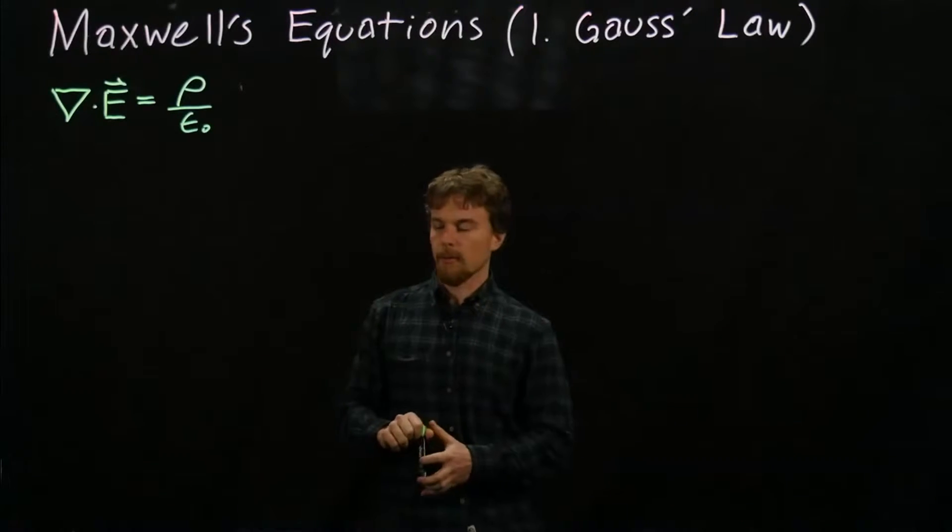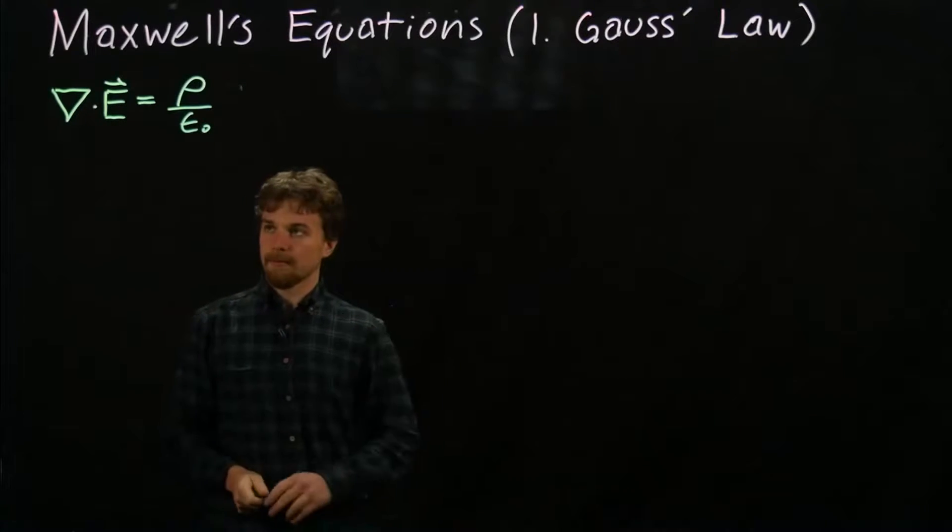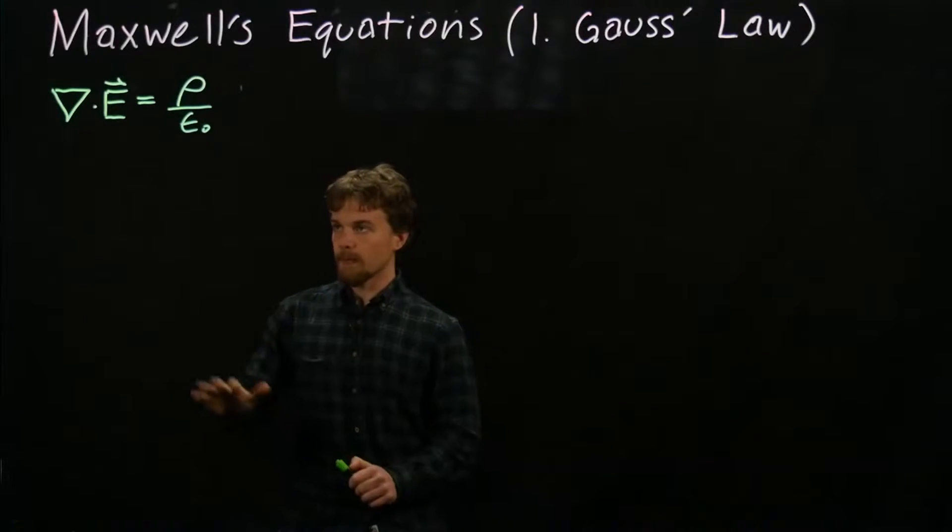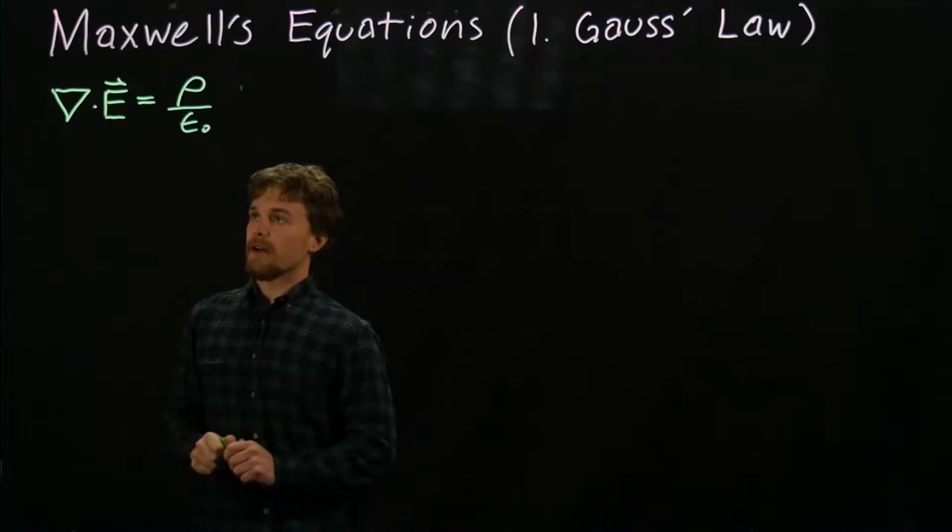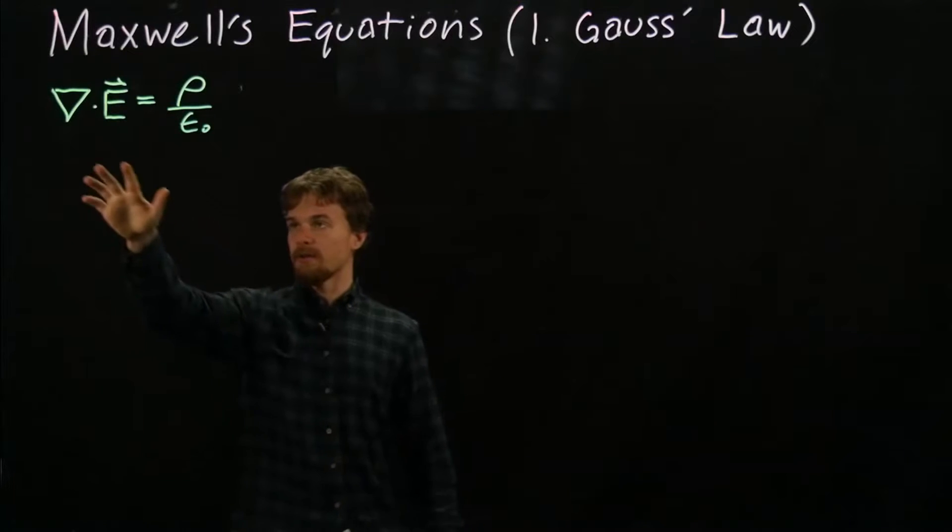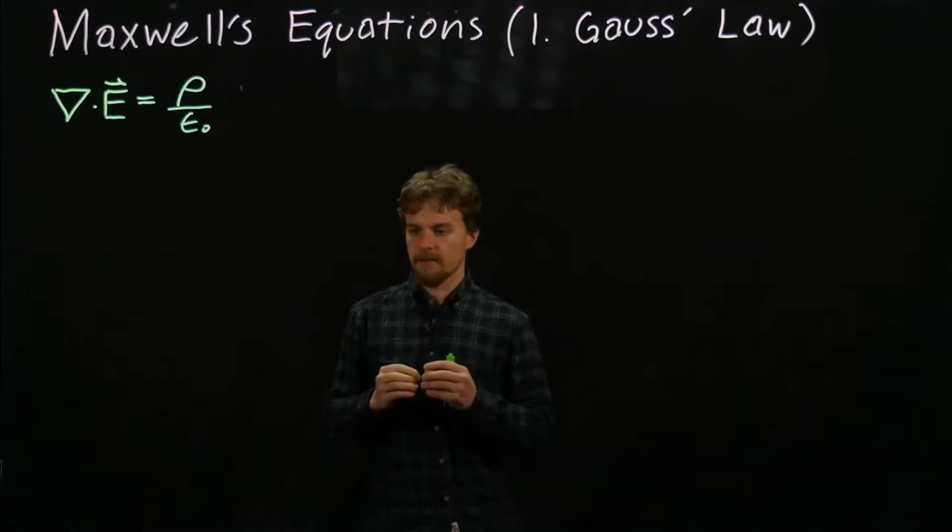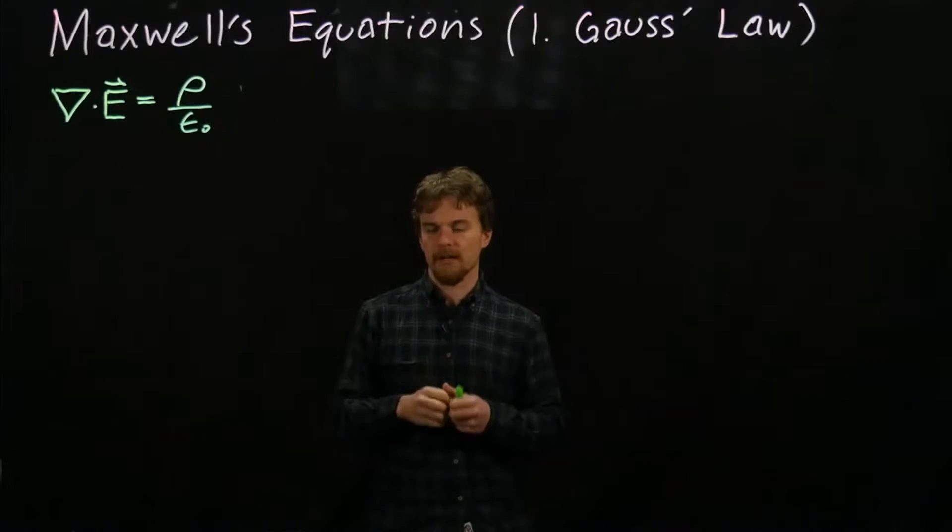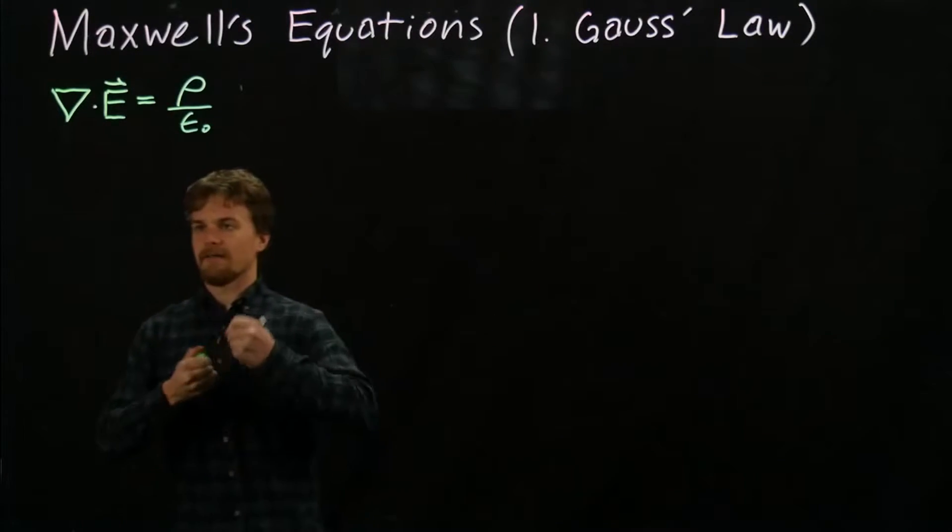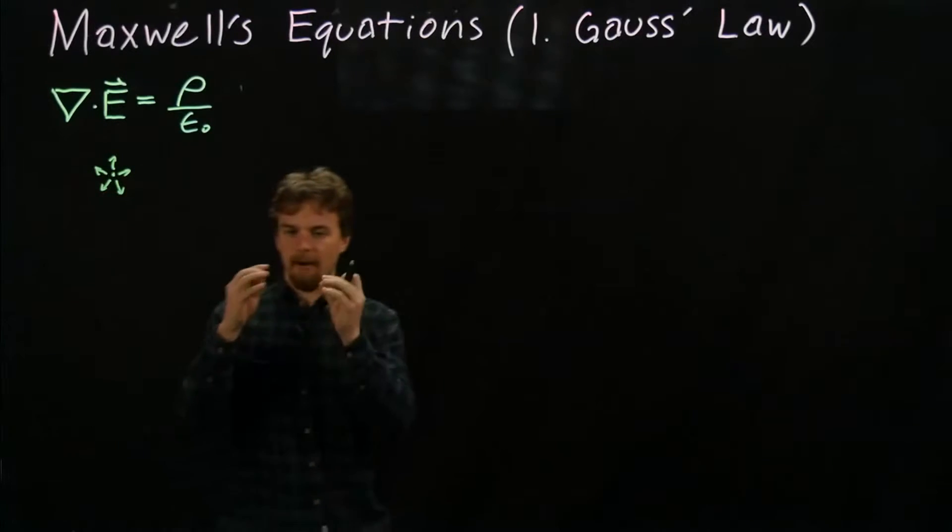Now in multivariable calculus you'll have learned that the divergence operator results in a scalar value, and it tells us at a particular point in space how the vector field tends to move away or into that space. You can visualize it as at a point in space, what's the behavior of the vector field as far as moving in or out of that one point.